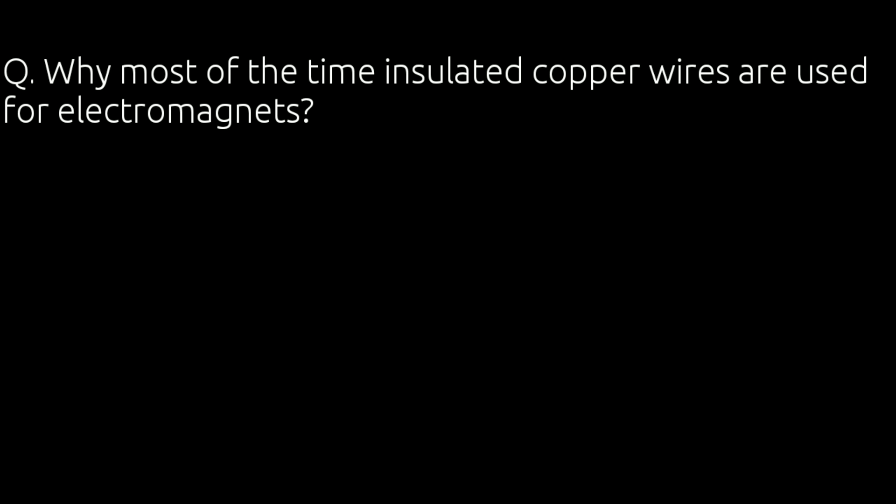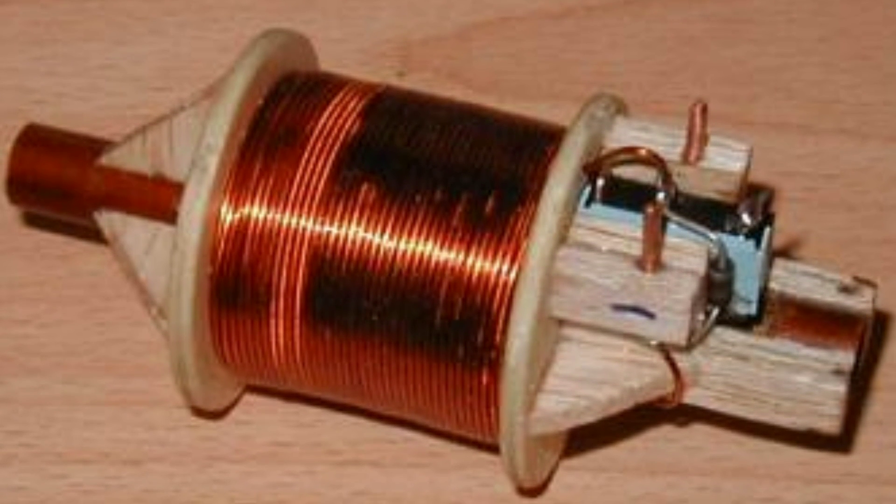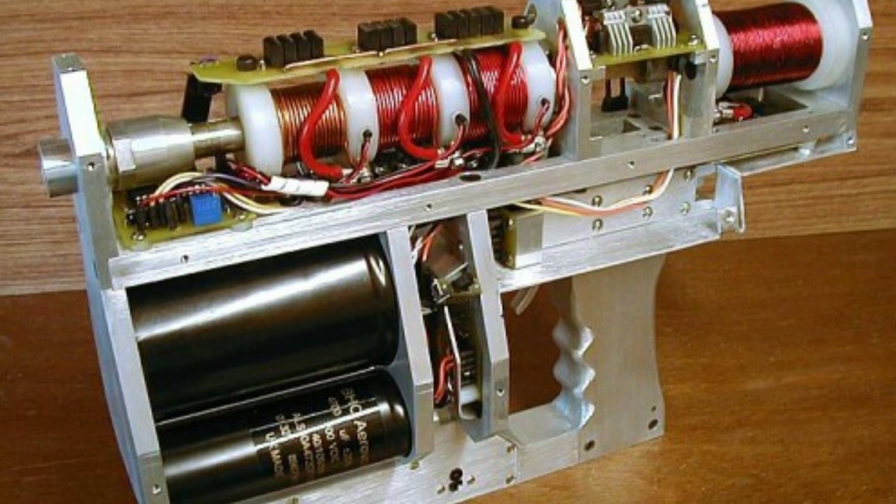Why are insulated copper wires used for electromagnets? Copper is used because it has low electrical resistance, making it easy for current to flow through it. Copper wire can easily be shaped to make a coil, and the thin layer of insulation saves space so you can wind more wire in a limited space.